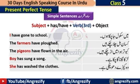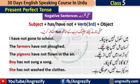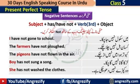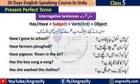That was the formula for simple sentences. Now for negative sentences: if you can make simple sentences, making negative, interrogative, or negative interrogative sentences is not difficult at all — only a small change is needed. Everything stays the same: subject, has/have, third form, object. We only add 'not' after the helping verb. For example: I have not gone to school. The farmers have not plowed. The pigeons have not flown in the air. Boy has not sung a song. She has not washed the clothes.